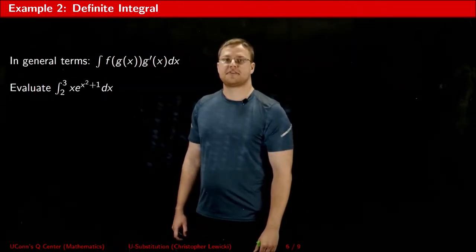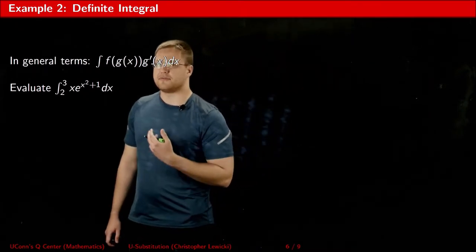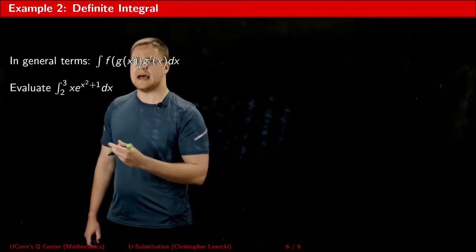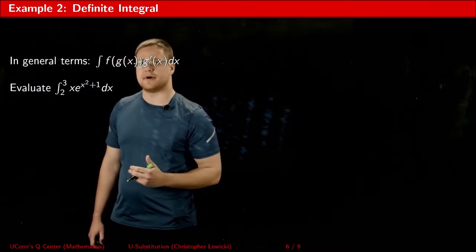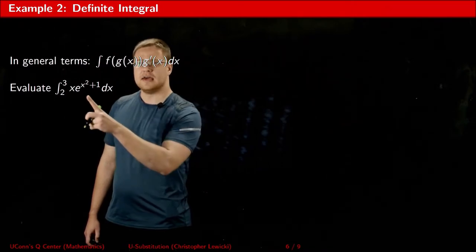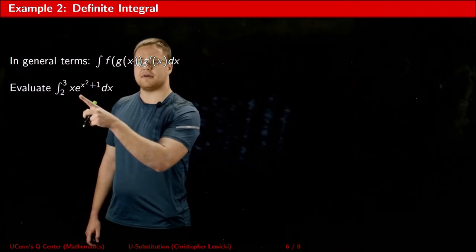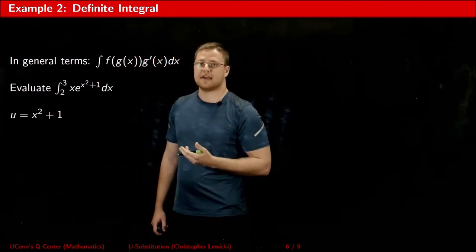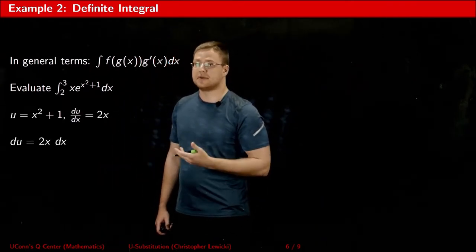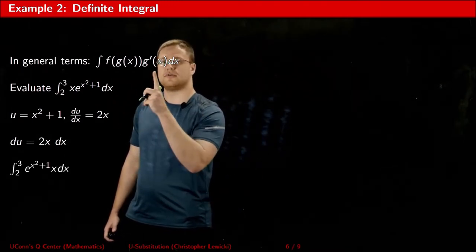Now let's use the u-substitution method to solve a definite integral. Just like before, the first question is: do we have somewhere in our expression a function with an outside part and an inside part? The answer is yes — we have e raised to x squared plus 1, where e is the outside function and x squared plus 1 is the inside function. I'm going to set the inside part equal to u, then solve for du, then rewrite the given integral.